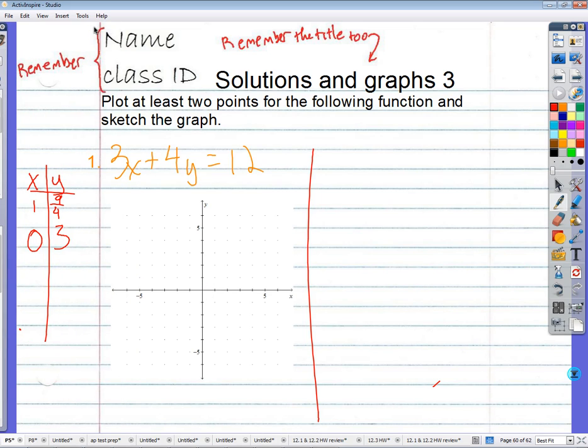First I have to graph one comma nine fourths. How am I going to get to nine fourths? Let's go up to one. How many fourths is one? How many fourths makes up one? Four. Four, one, two, three, four fourths. Five, six, seven, eight fourths. Nine fourths. Two and one fourth. Two would be eight fourths. One more fourth would be nine fourths. Two and one fourth.